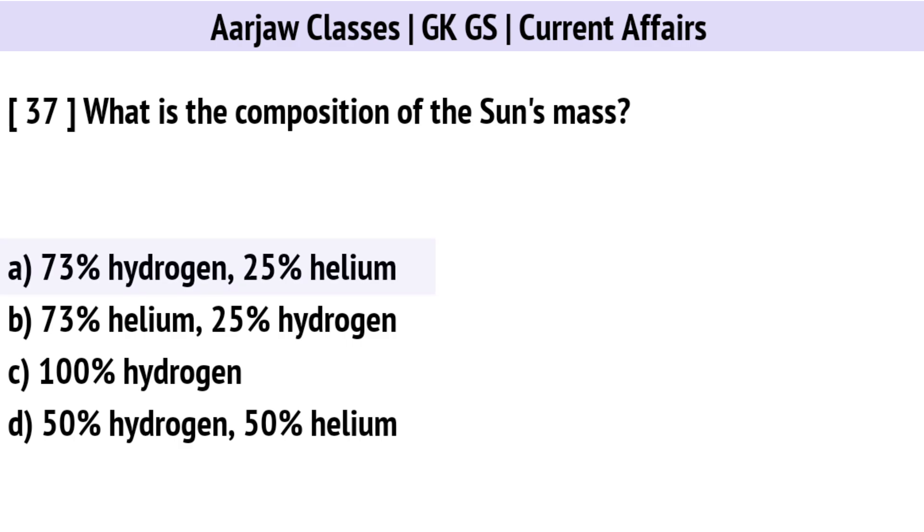What is the composition of the Sun's mass? Correct option is A: 73% hydrogen and 25% helium.